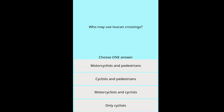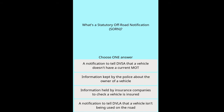Question: Who may use toucan crossings? Options: motorcyclists and pedestrians, cyclists and pedestrians, motorcyclists and cyclists. Question: What's a Statutory Off-Road Notification (SORN)? Options: a notification to tell DVSA that a vehicle doesn't have a current MOT, information kept by the police about the owner, information held by insurance companies, a notification to tell DVLA that a vehicle isn't being used on the road.